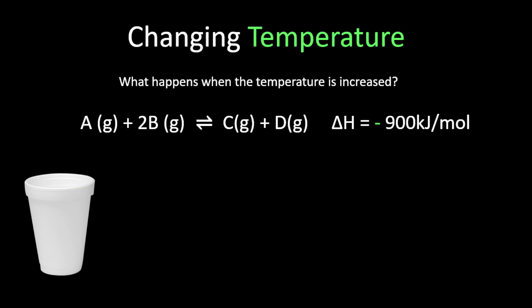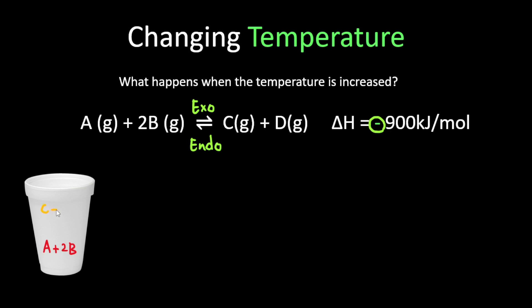Whenever temperature is mentioned, what you need to do first is identify what is your forward reaction. Because of this negative sign here, we know that our forward reaction is an exothermic reaction and vice versa, our reverse reaction is an endothermic reaction. So if I put in A and 2B, I will be producing C and D. Because it's the exothermic reaction, heat will be given out because my forward reaction is negative. So the first thing you need to write down when asked about temperature is whether your forward reaction is exothermic or endothermic.